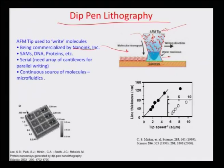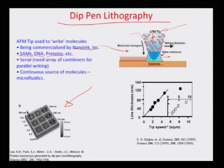A company called Nano Ink Incorporated made this process happen. Initially it was a serial process, but initiatives have been made to make it parallel with multiple tips writing different molecules simultaneously. You can use this to write self-assembled monolayers, DNA, proteins, and so on. An example illustrates a protein microarray on an almost 5 micron by 5 micron surface where each spot is a protein molecule — different protein molecules placed by dip pen lithography creating microarrays separated by a resolution of about 200 to 300 nanometers.